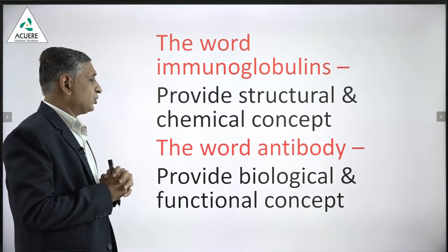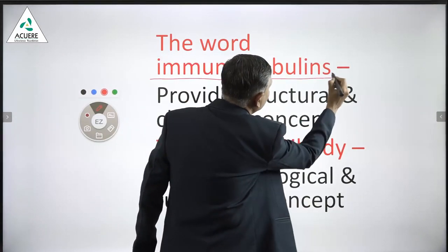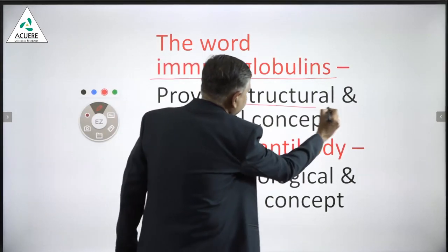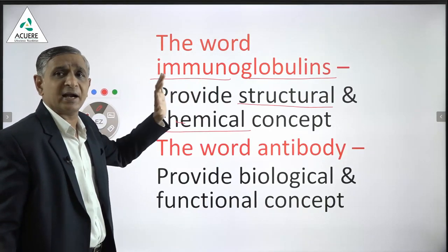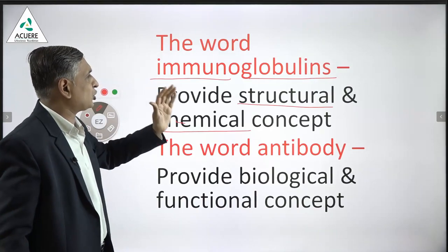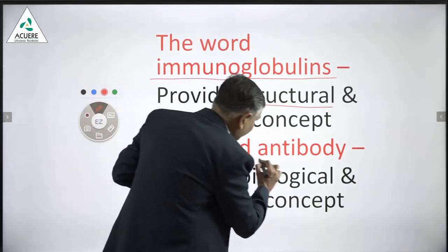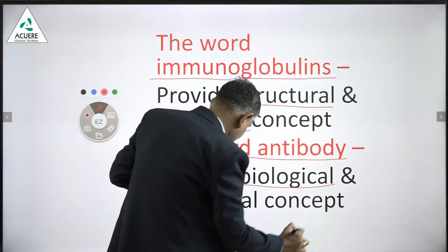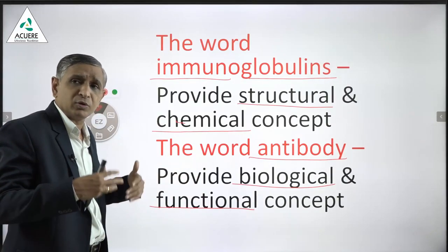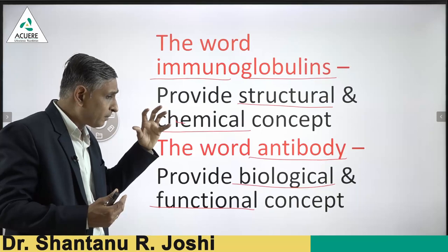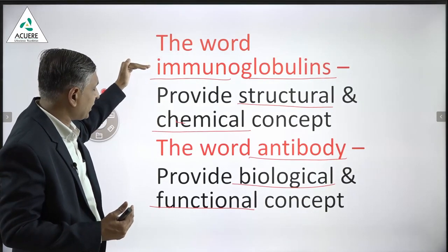Two important terms: immunoglobulin gives the structural and chemical form of the antibody — chemically they are globulins, structurally proteins. The word antibody gives the biological and functional concept — what they do is capture and kill antigens. These two words are important: immunoglobulin and antibody.